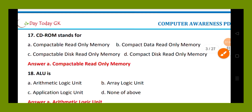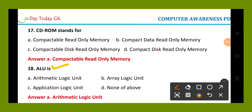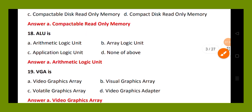Question number 18. ALU is: option A, arithmetic logic unit; option B, array logic unit; option C, application logic unit; option D, none of the above. The right answer is option A, arithmetic logic unit. ALU stands for arithmetic logic unit.